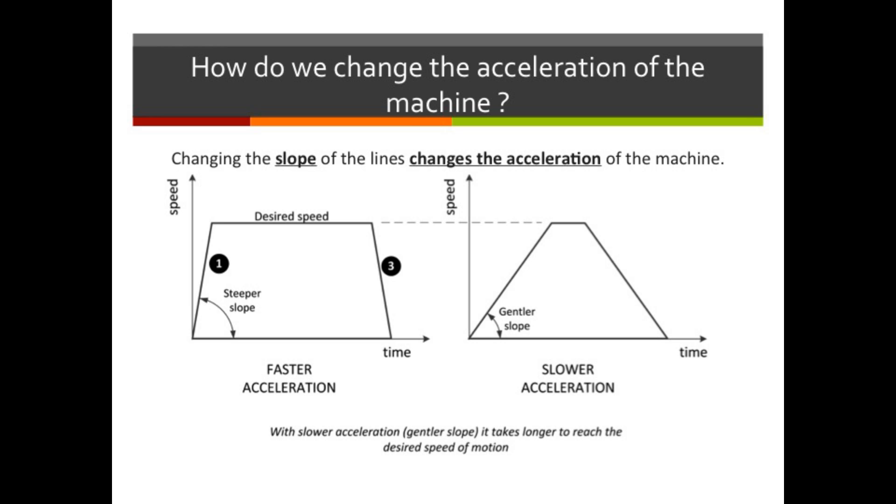We can change how quickly the machine speeds up to get to its operating speed by changing the slope of line one. In other words, we can increase or decrease the acceleration of the machine by changing the slope of line one. If the slope is steep, the machine will speed up quickly. If the slope is gentle, the machine will take longer to speed up. Note that in either case, the machine ultimately reaches its desired speed.